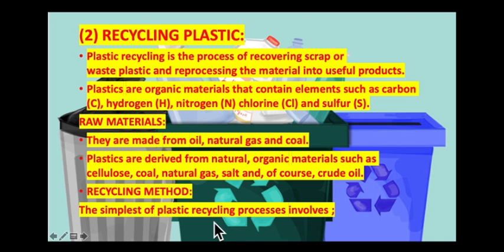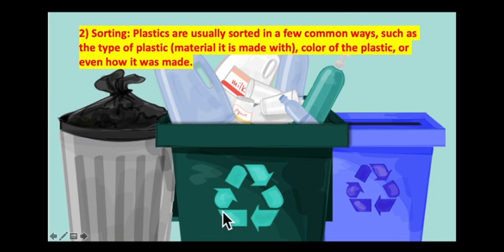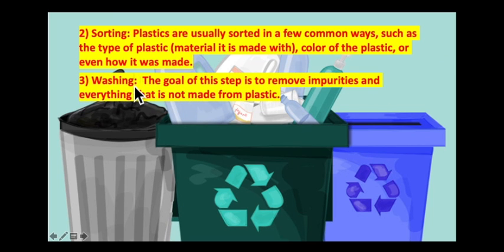The simplest plastic recycling processes involve the following steps. First step is collection: collecting the plastic materials to be recycled. Second step is sorting: plastics are usually sorted in a few ways, such as the type of plastic material it is made with, the colour of plastic, or how it was made. Third step is washing: the goal of this step is to remove impurities and everything that is not plastic - for example, leftover food, fruits, or vegetables.